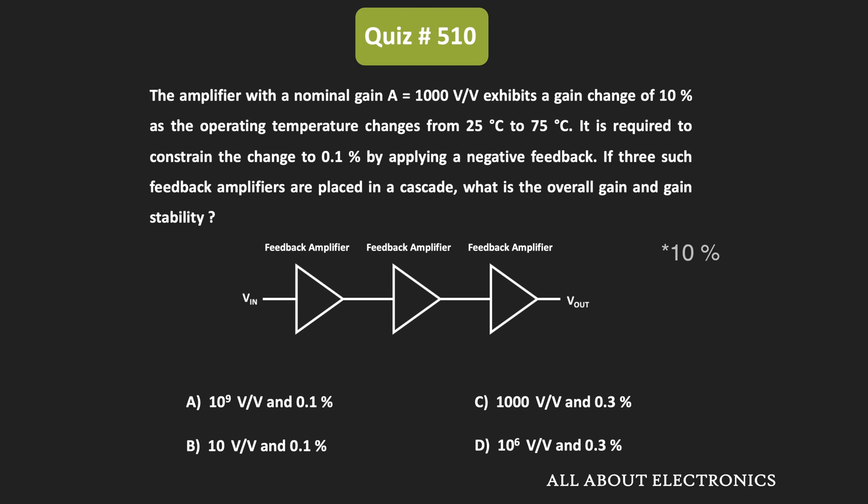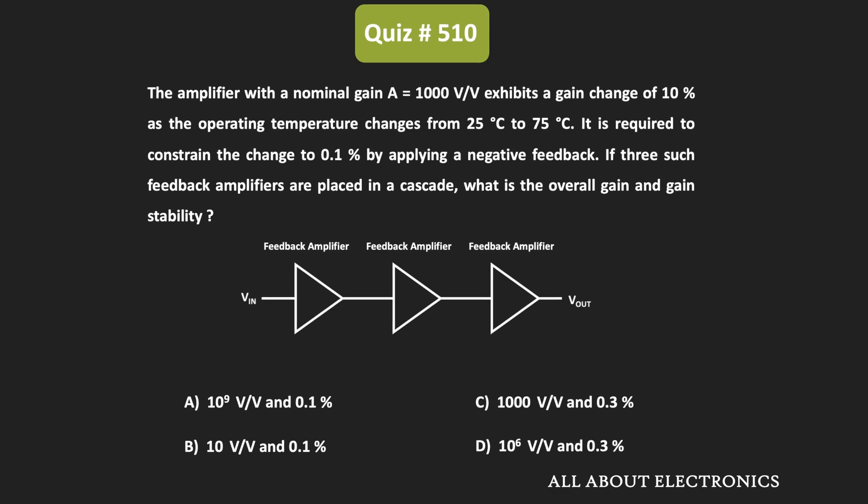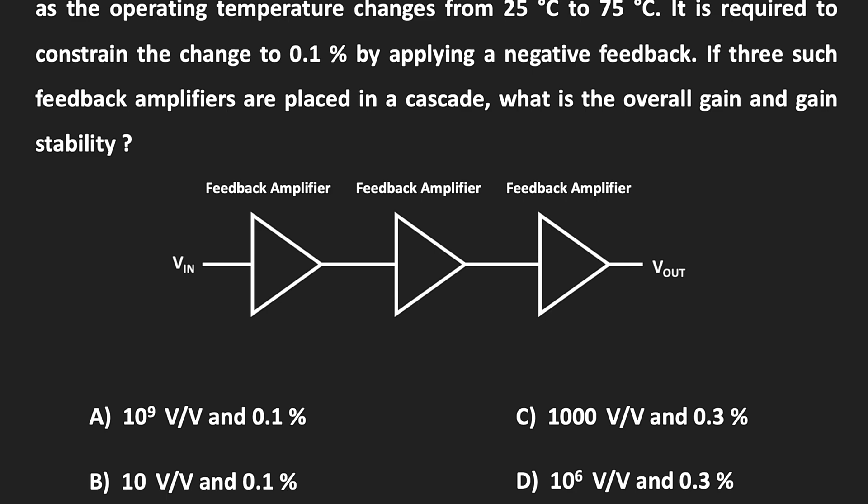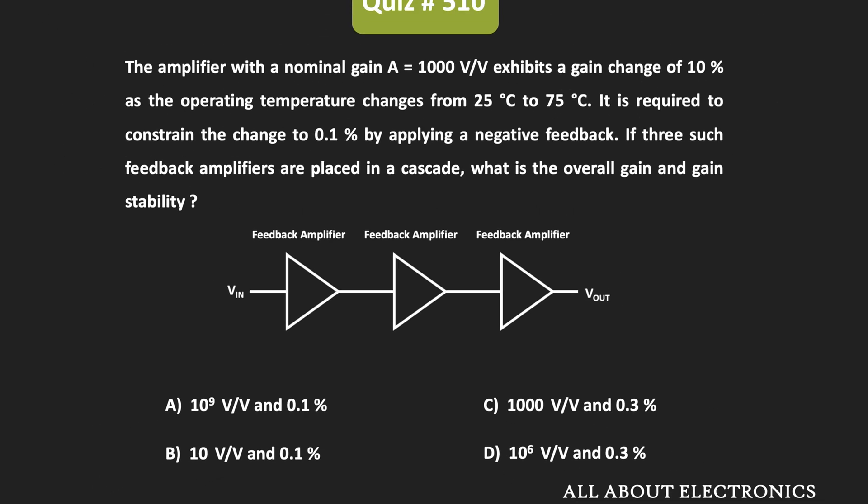this gain changes by 10%. So using negative feedback, it is required to constrain the gain of this amplifier to 0.1% — that means using negative feedback, its change in gain is constrained to 0.1%. Three such feedback amplifiers are connected in a cascaded connection, and we have been asked to find the overall gain and the gain stability of this cascaded system.